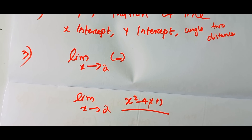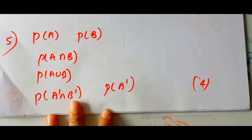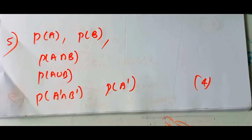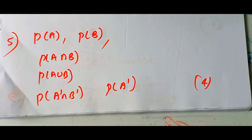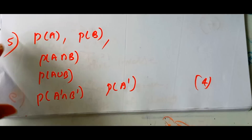According to probability: P of A or P of B, P of A intersection B, P of A union B, P of A complement intersection B complement, P of A complement. I will mark 4.